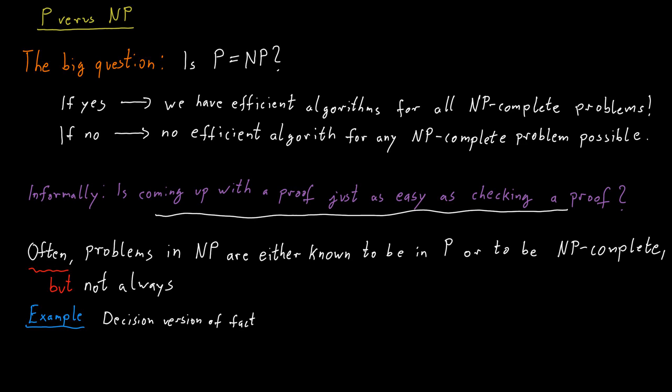One example of this is factoring. So if you have a number, you should figure out what the prime factorization of that number is. This is of course not a decision problem the way I stated it, but you can turn it into a decision problem and then that decision problem is in NP, but it's not known to be in P and it's also not known to be NP-complete. And this is a very important problem for all sorts of reasons. For example, it can be relevant for cryptography and so on.